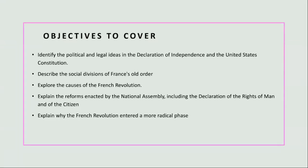The Declaration of Independence, penned by Thomas Jefferson in 1776, and the United States Constitution, ratified in 1787, are cornerstones of American democracy. The Declaration, with its ringing assertion that 'all men are created equal, and endowed with unalienable rights such as life, liberty, and the pursuit of happiness,' set forth the idea of individual rights and equality before the law.